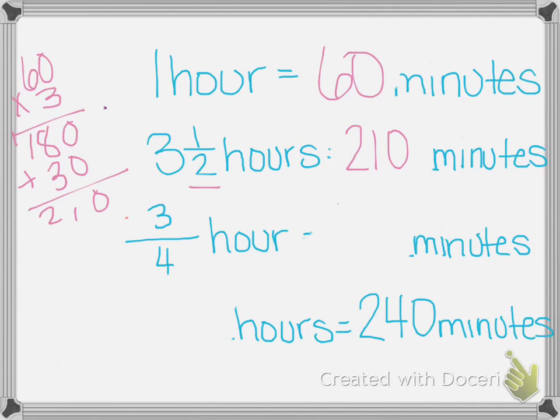The next one says 3 fourths of an hour or 3 quarters of an hour. In 1 quarter of an hour, we have 15 minutes. We have 3 quarters of an hour. So we have to do 15 times 3. 3 times 5 is 15. Carry the 1. 3 times 1 is 1. Plus 1 is 4. 45 minutes.